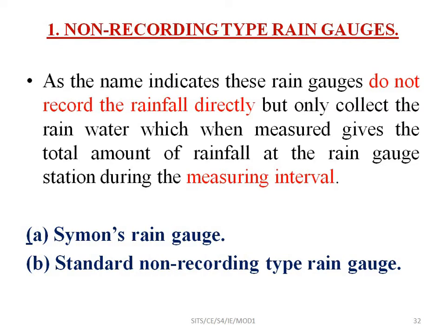Non-recording rain gauges only collect the water, which when measured gives the total amount of rainfall at the rain gauge station during the measuring interval. The equipment is non-recording — it is manually recorded. There are two types of non-recording rain gauge: the first is Simon's rain gauge and the second is the standard non-recording type rain gauge.